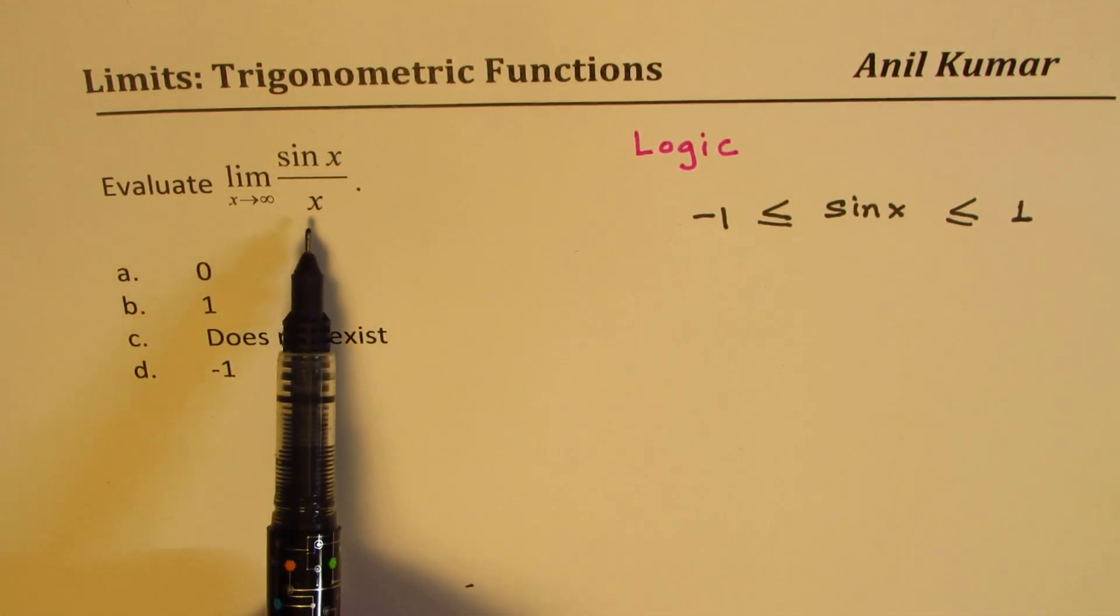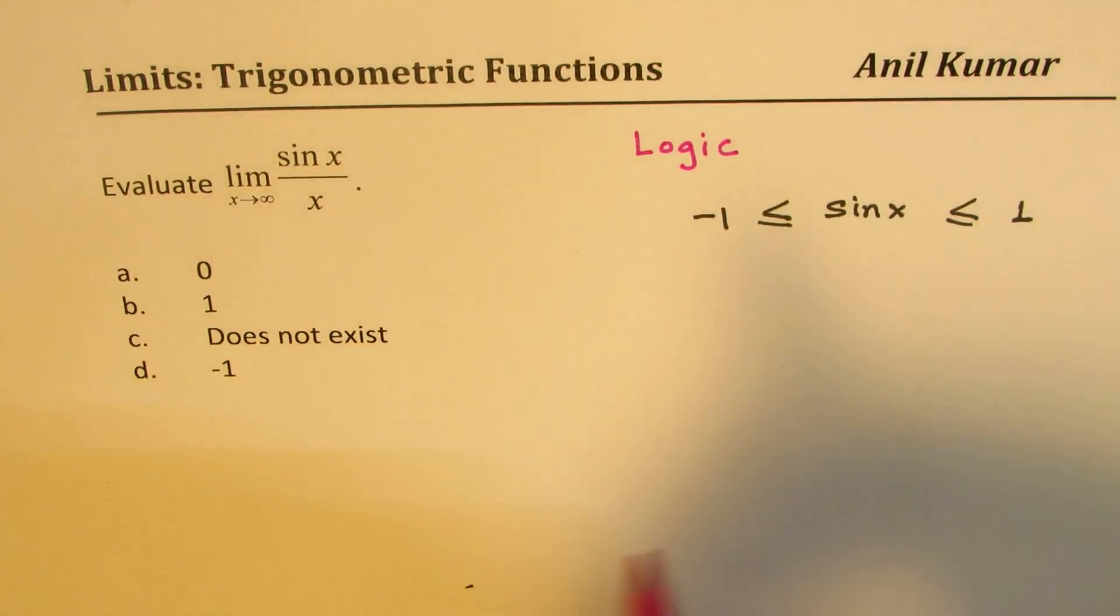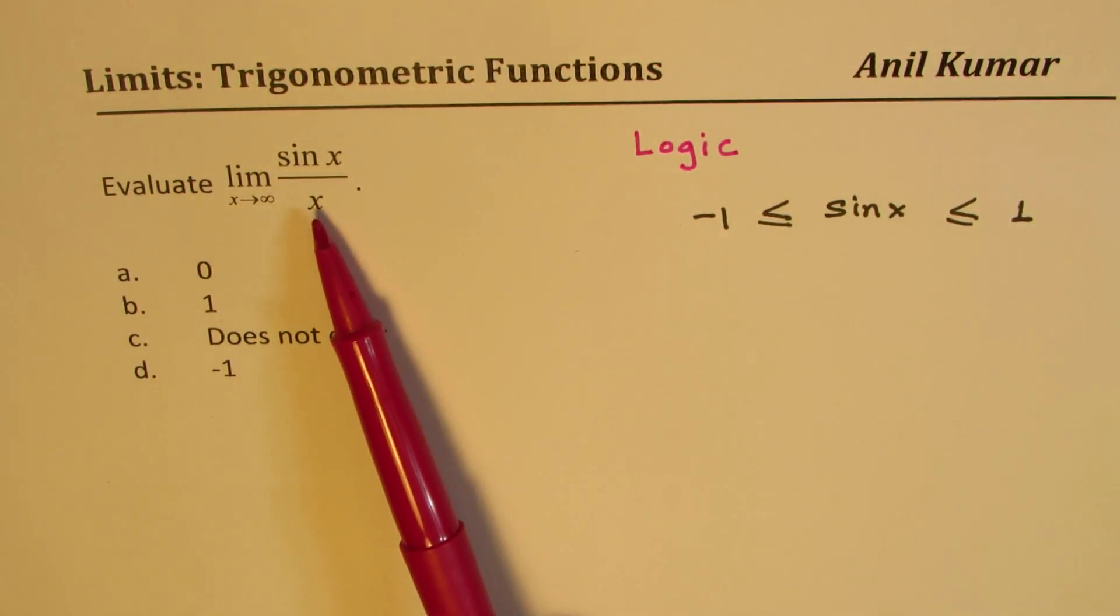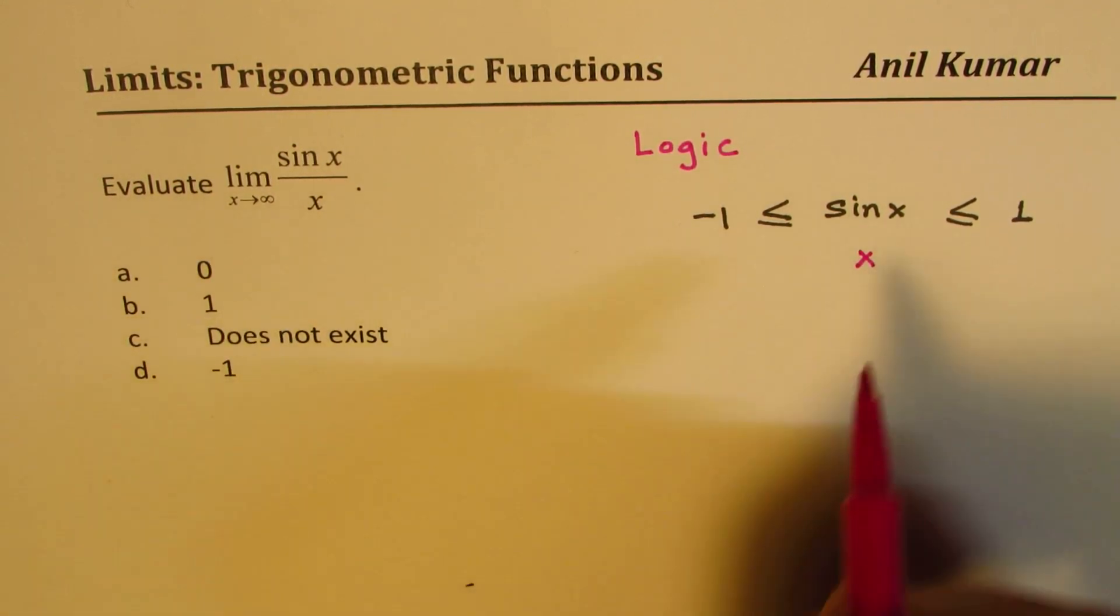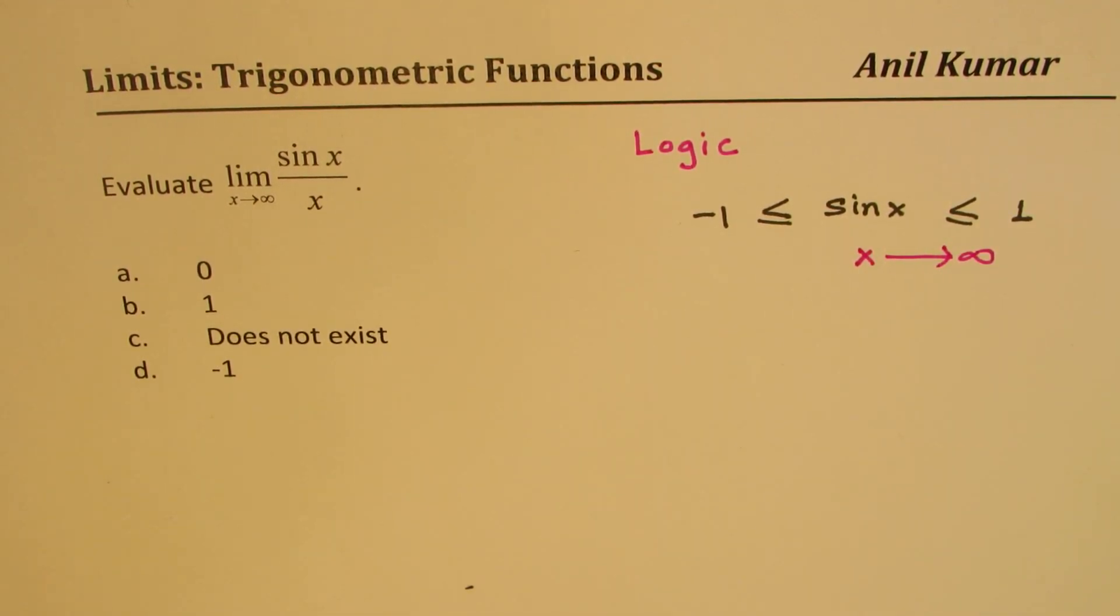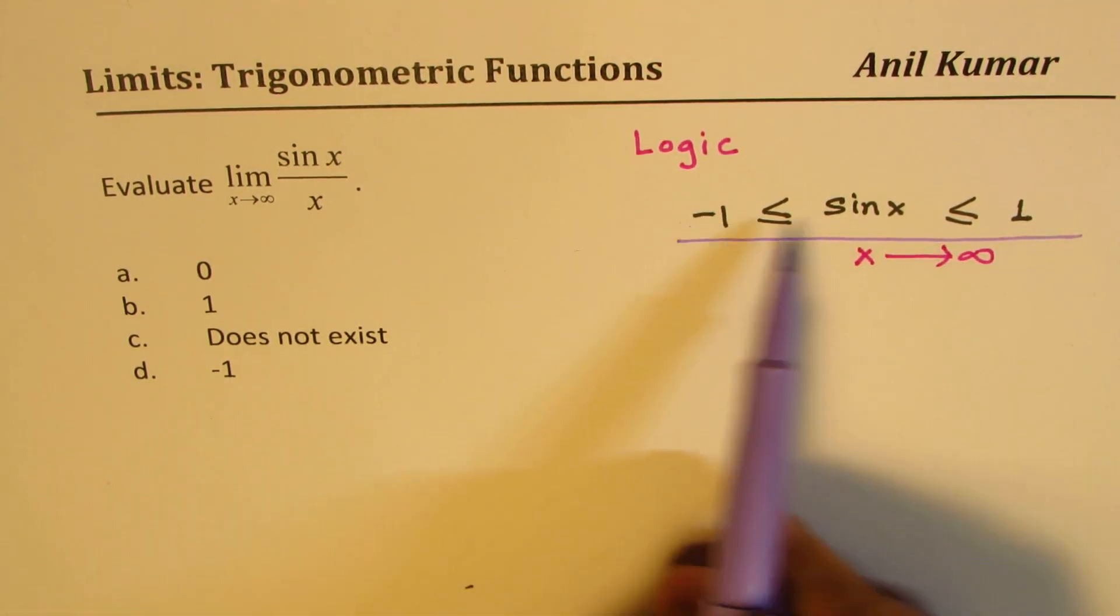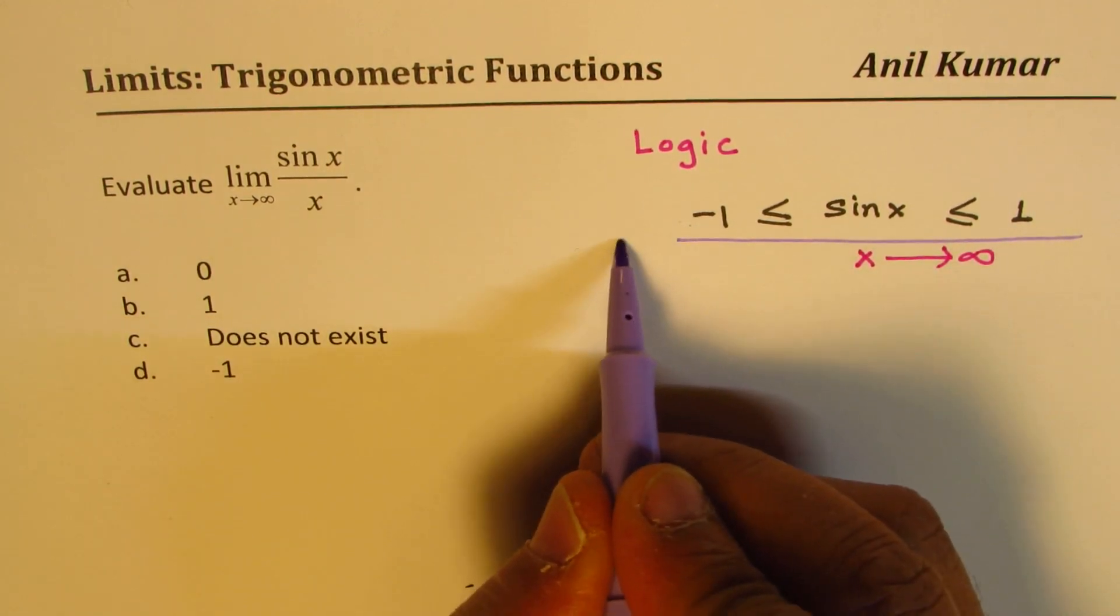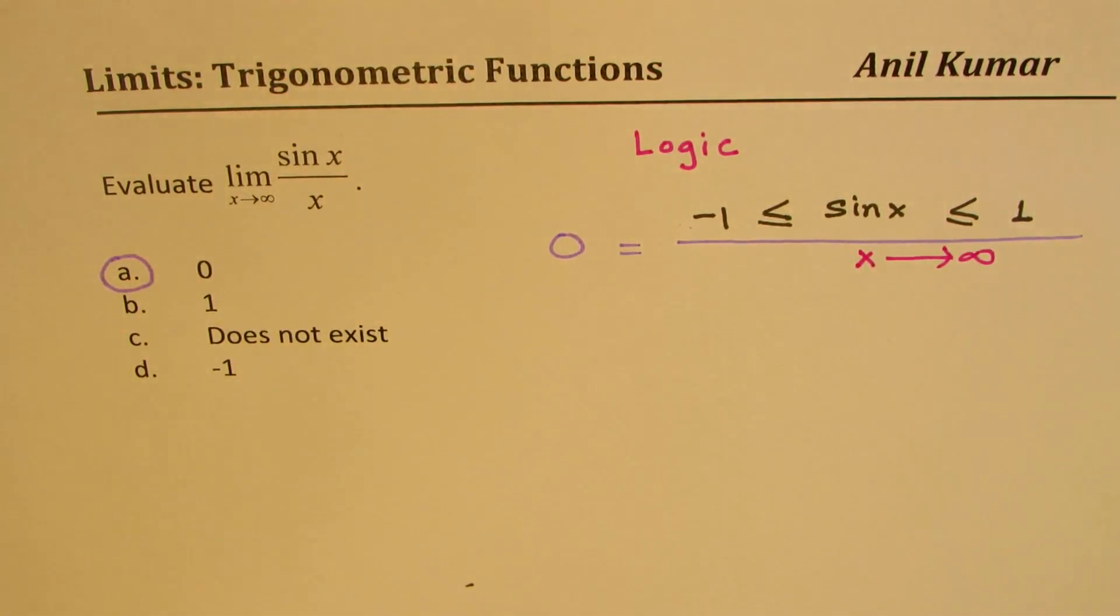In the denominator we have x. So what we see here is that the numerator value could be between -1 and +1, however the denominator value x could be approaching infinity. Now if you divide any number between -1 and +1 by infinity, what do you get? We get zero, and therefore a should be your answer.